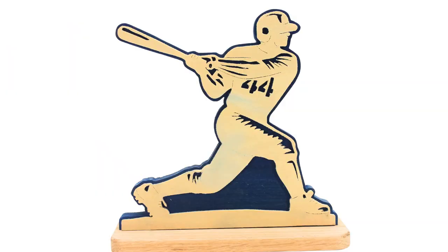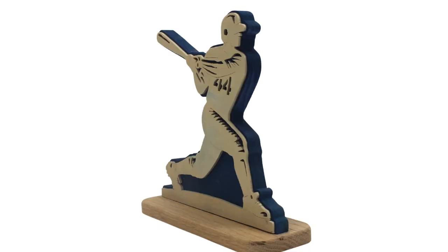The back is just a simple outline a little bigger than the front piece. I used half inch poplar for it and painted it a dark blue for a nice contrast against the off-white of the basswood baseball player.